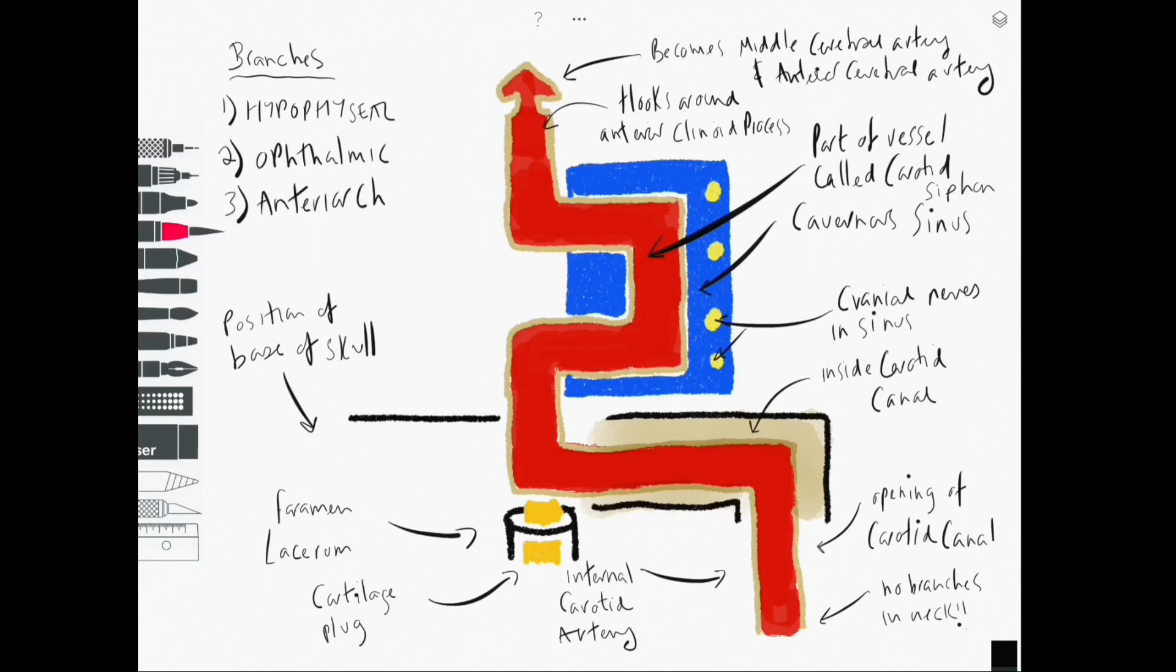The ophthalmic vessels would come from the region around the anterior clinoid process. They would leave beneath the optic nerve and give rise to the central arteries of the retina.